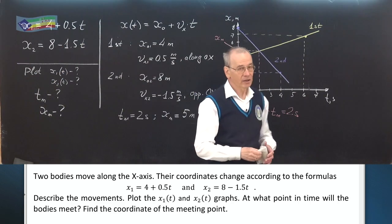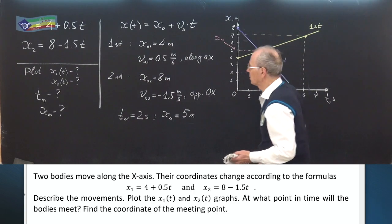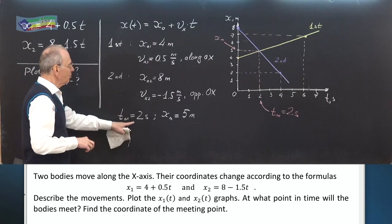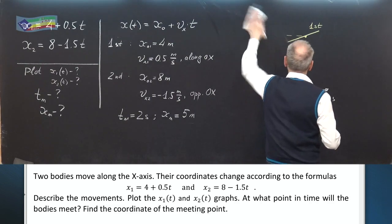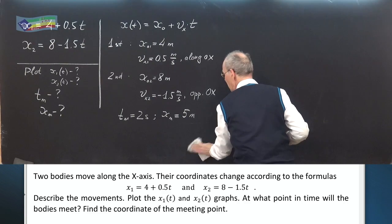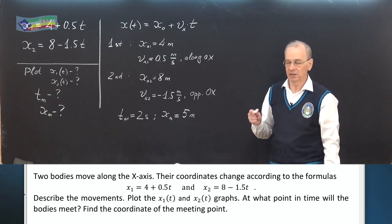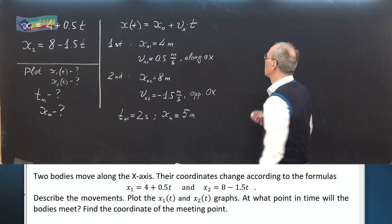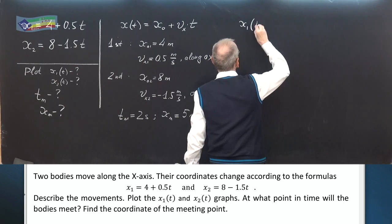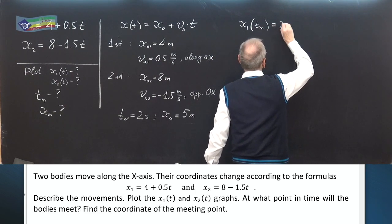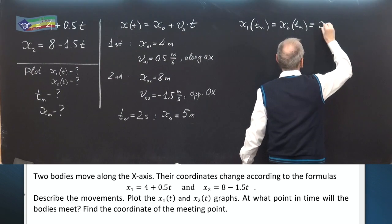This was graphical method. But much more accurate is result of analytical method, method of calculation. Let us use this method to solve the same problem. What is meeting? Meeting is the event when at the same moment in time bodies have the same coordinates.